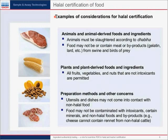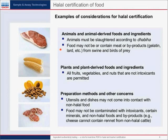Halal certification of food — what are some examples of considerations for halal certification? To be certified as halal, animals and animal-derived food ingredients must be slaughtered according to the religious rules. There are specific rules for slaughtering animals for meat that must be followed for the meat to be considered halal. Food may not be or contain meat or byproducts such as gelatin, lard from swine, and birds of prey. For plants and plant-derived foods and ingredients to be certified as halal, fruits, vegetables, and nuts that are not intoxicants are permitted.